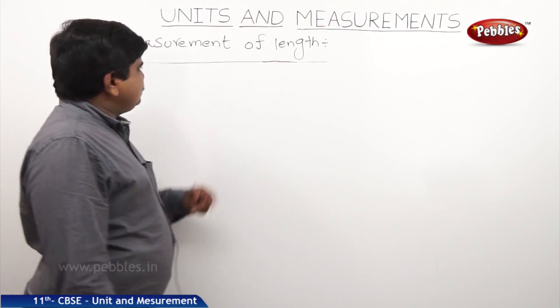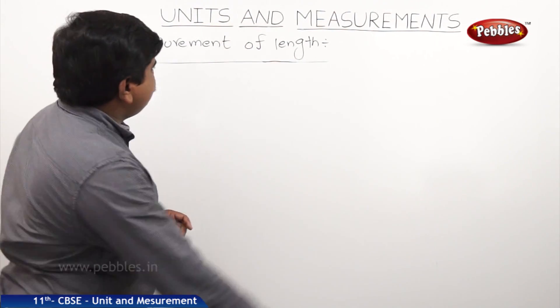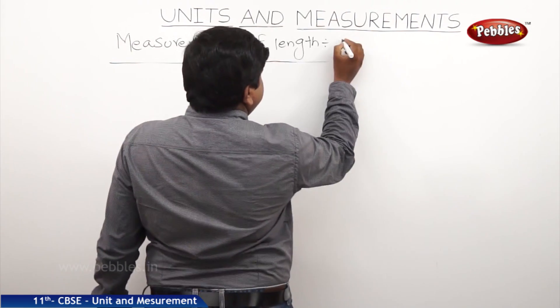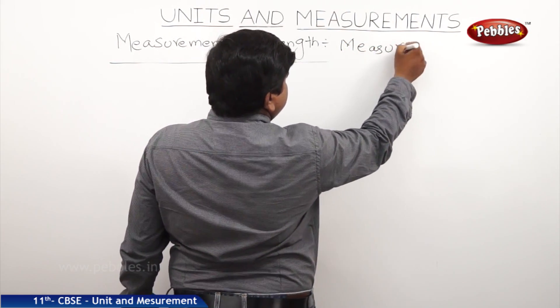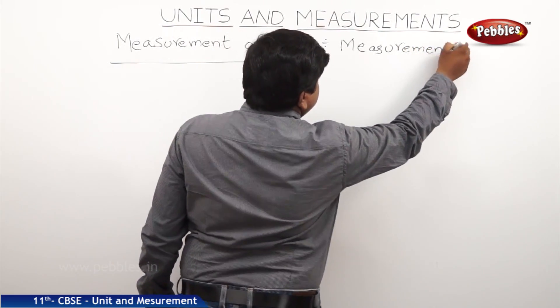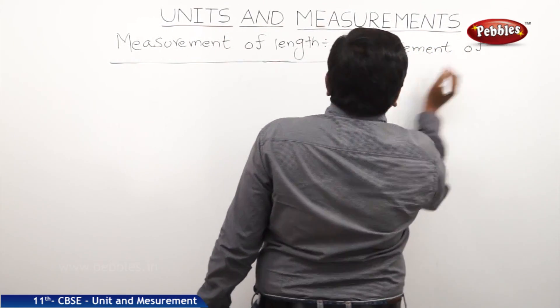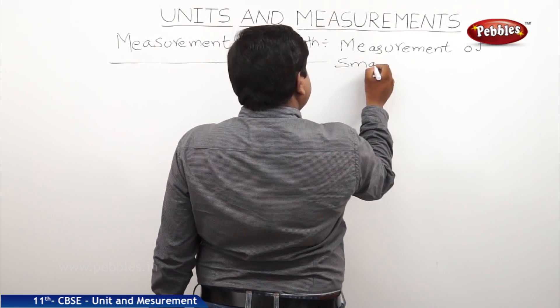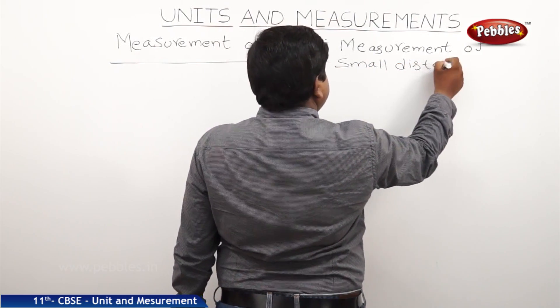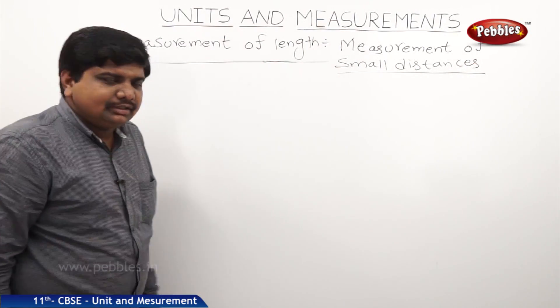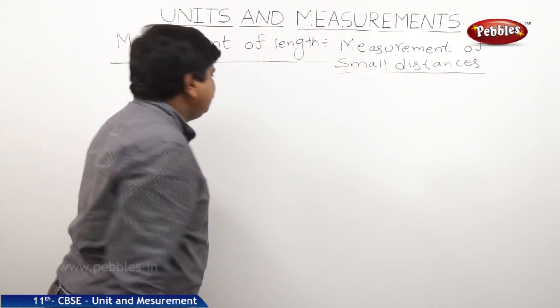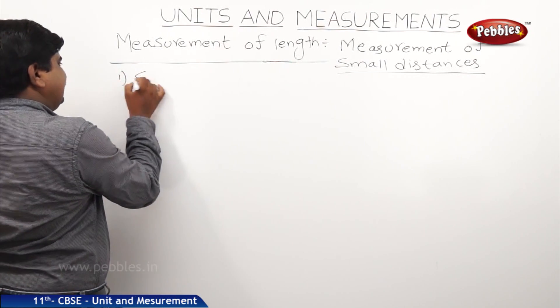In the same concept of measurement of length, we are now discussing the measurement of large distances and small distances. For large distances we use the parallax method. For small distances, one concept is measuring the size of molecules.